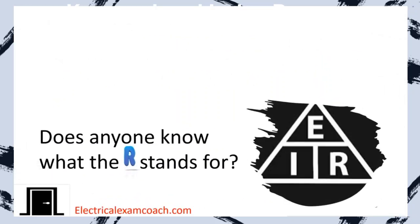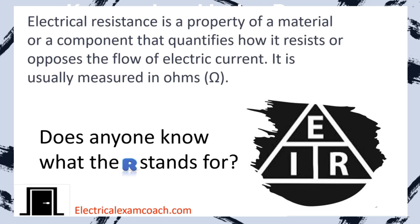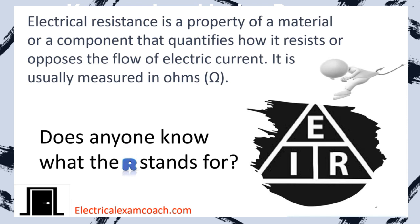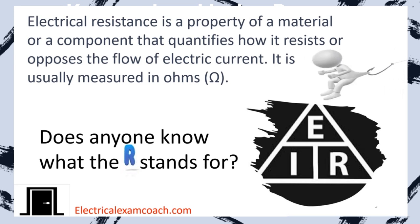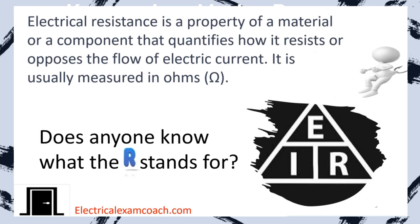The R stands for electrical resistance. It is a property of a material or component that quantifies how it resists or opposes the flow of electric current, and it's usually measured in Ohms. It's letting us know how much it's resisting that electrical flow that we're trying to produce with the voltage, which is also going to affect the amperage that flows through the circuit. All three of these are directly related together. Remember that E stands for voltage, I stands for amperage, and R stands for resistance.